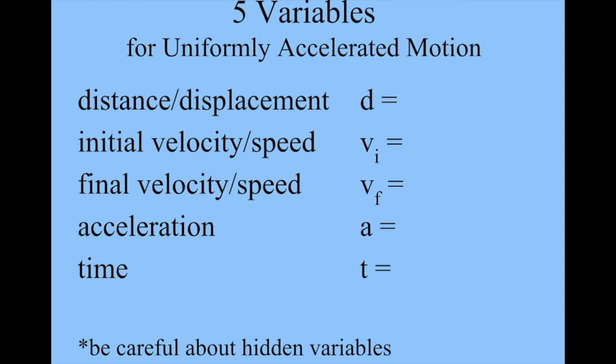You have to be careful because there are often hidden variables written into a word problem that are not necessarily explicit. A car that starts from rest has an initial speed of zero. A car that comes to a stop has a final speed of zero. Anything in the air would have a y acceleration of 9.81 meters per second squared. You might have a situation where something goes up and down where the time doubles, so be careful about those hidden variables.